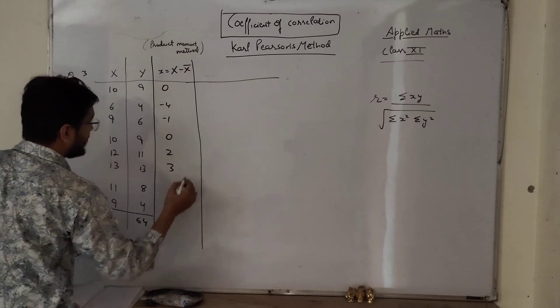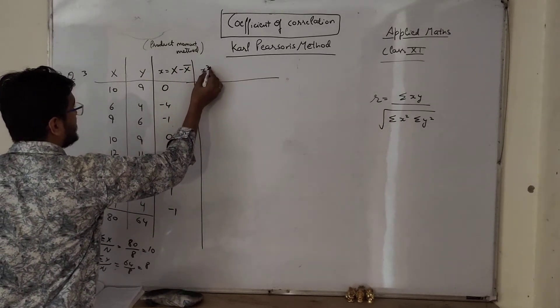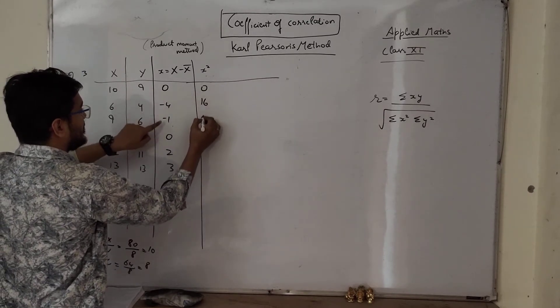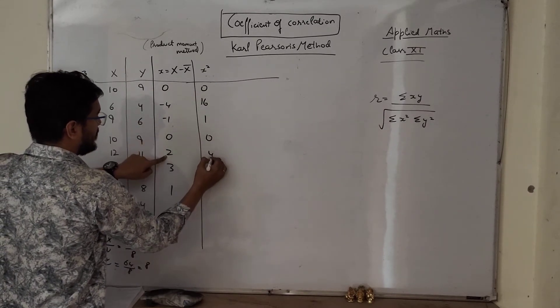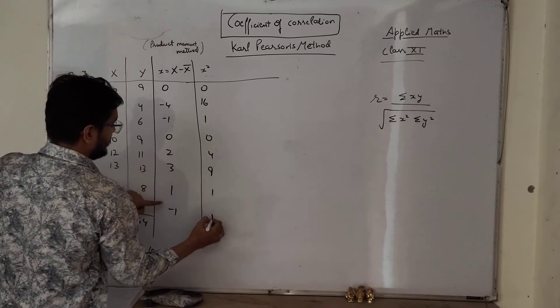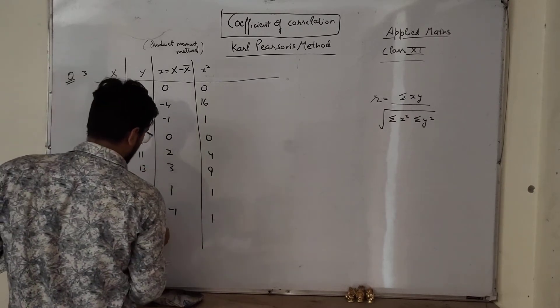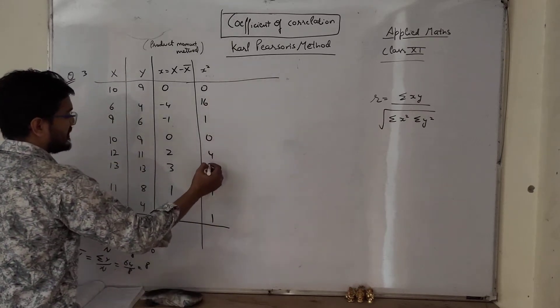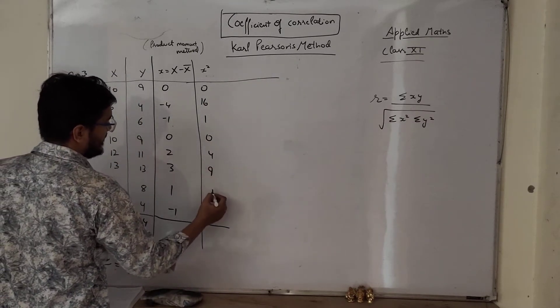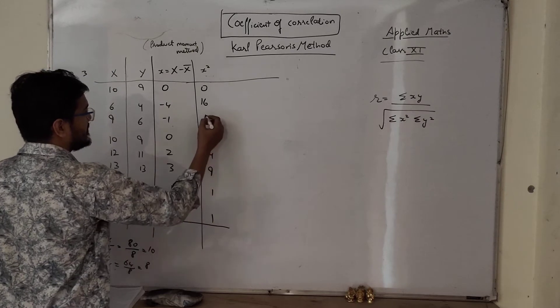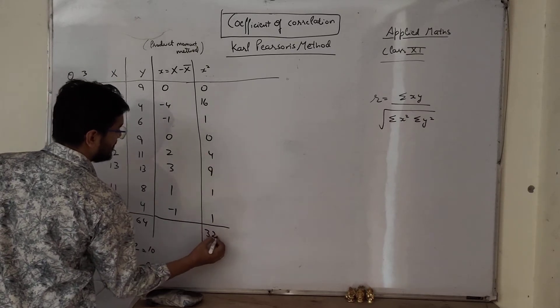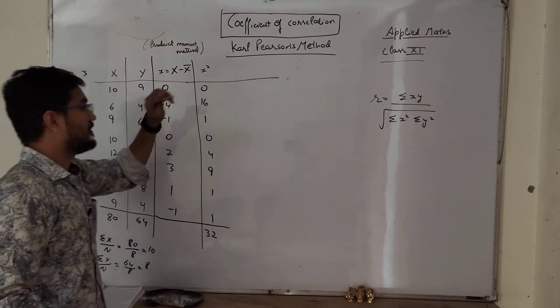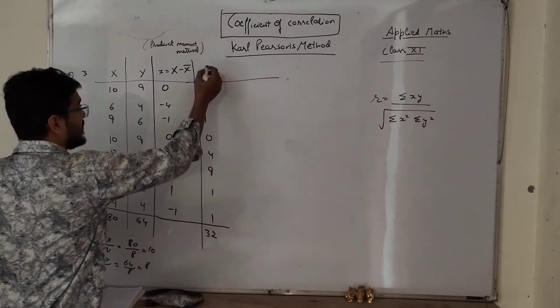Similarly next column we have x square. So square of this: 0, 16, 1, 0, 4, 9, 1, 1. So sum of it we have to determine: 16, 17, okay, 9, 10, 11, 15, 16, 32. We don't need this sum, it is not related to our formula. We only need x square. Now let's come to y.